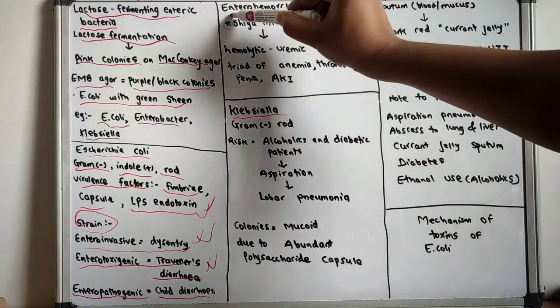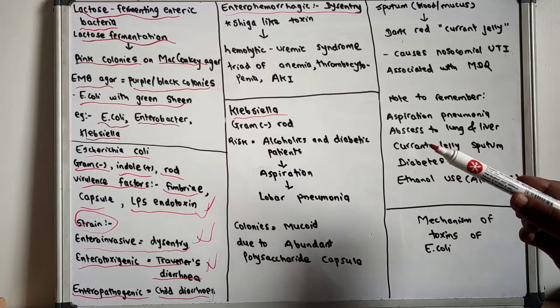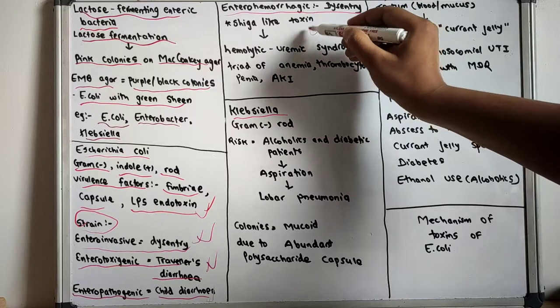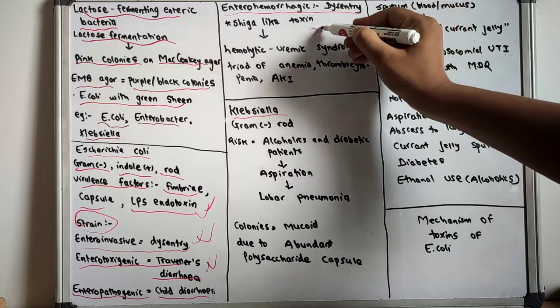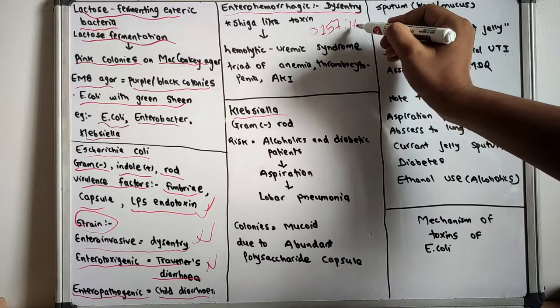The enterohemorrhagic E. coli causes dysentery. The enterohemorrhagic E. coli is also known as O157:H7.